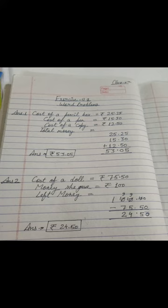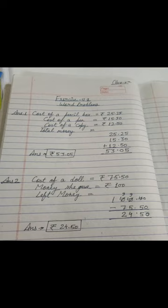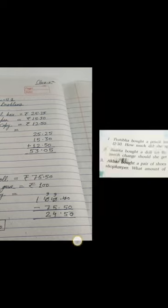उसने 100 rupees दिये थे, तो left money के लिए आप 100.00 लिखेंगे, उससे minus करेंगे 75.50। Answer आया 24 rupees and 50 paise। तो इस तरीके से answer mention करेंगे। Question number one and two complete हो गए। Rest of the exercise आपको अपने आप करना है।